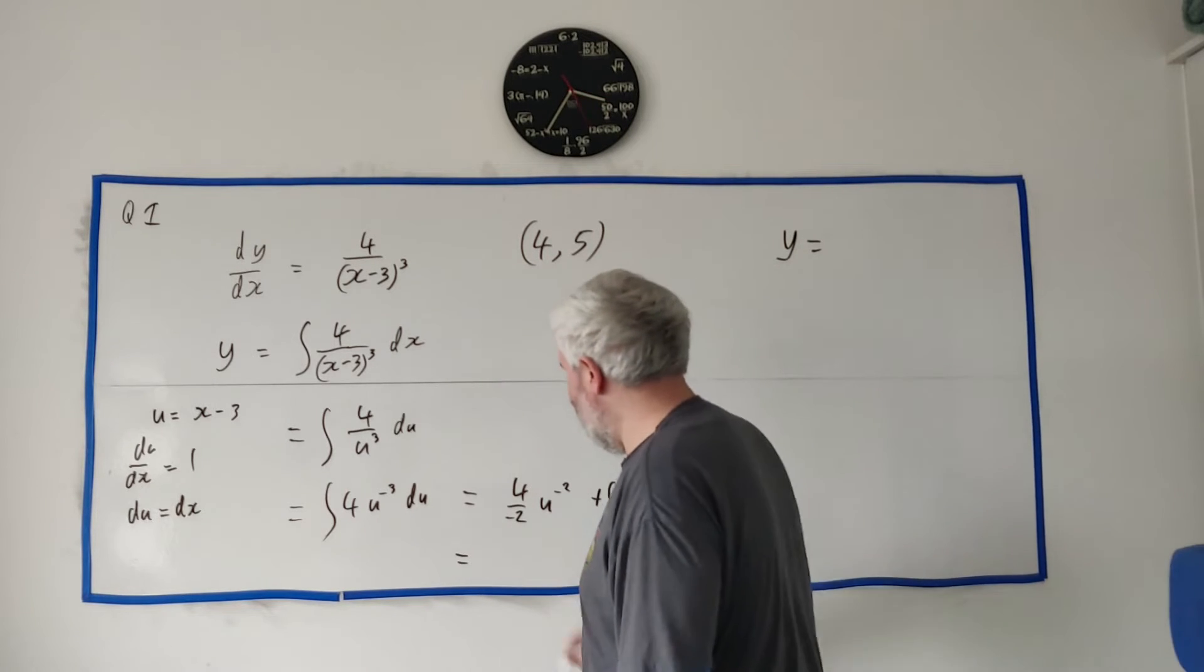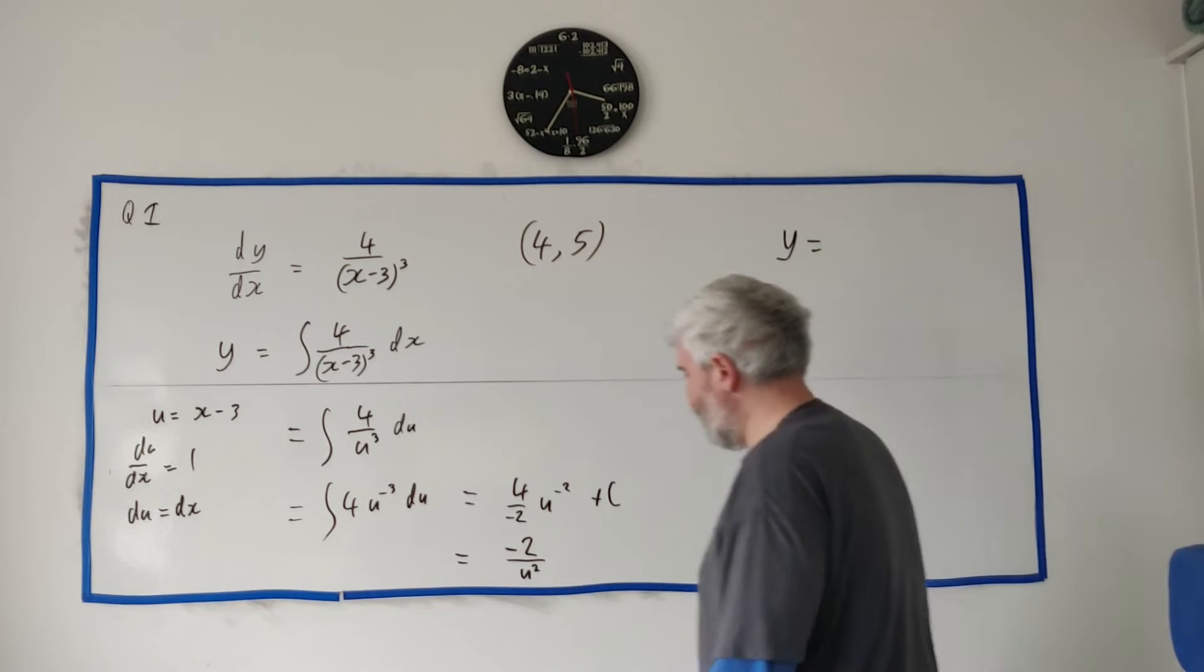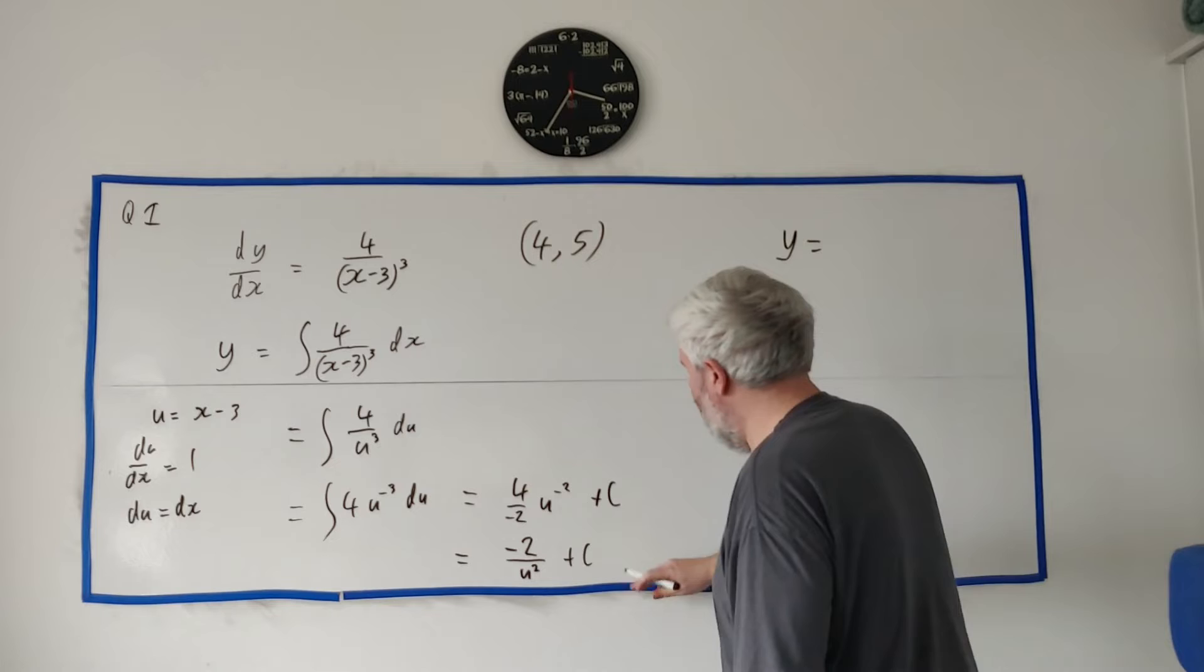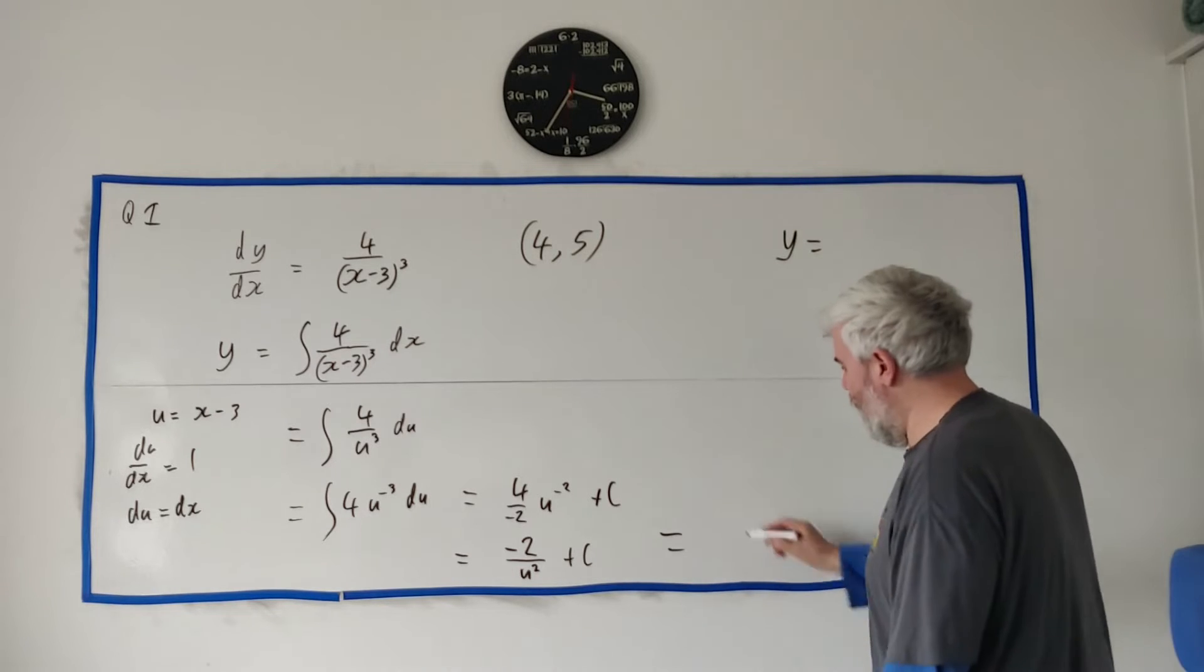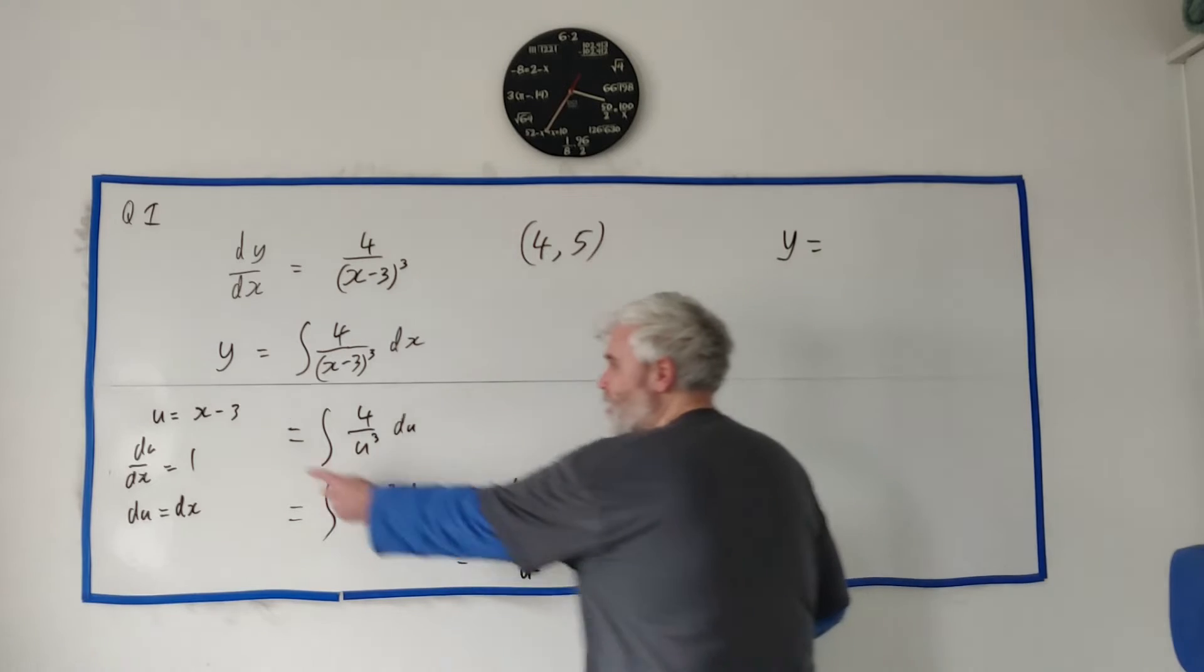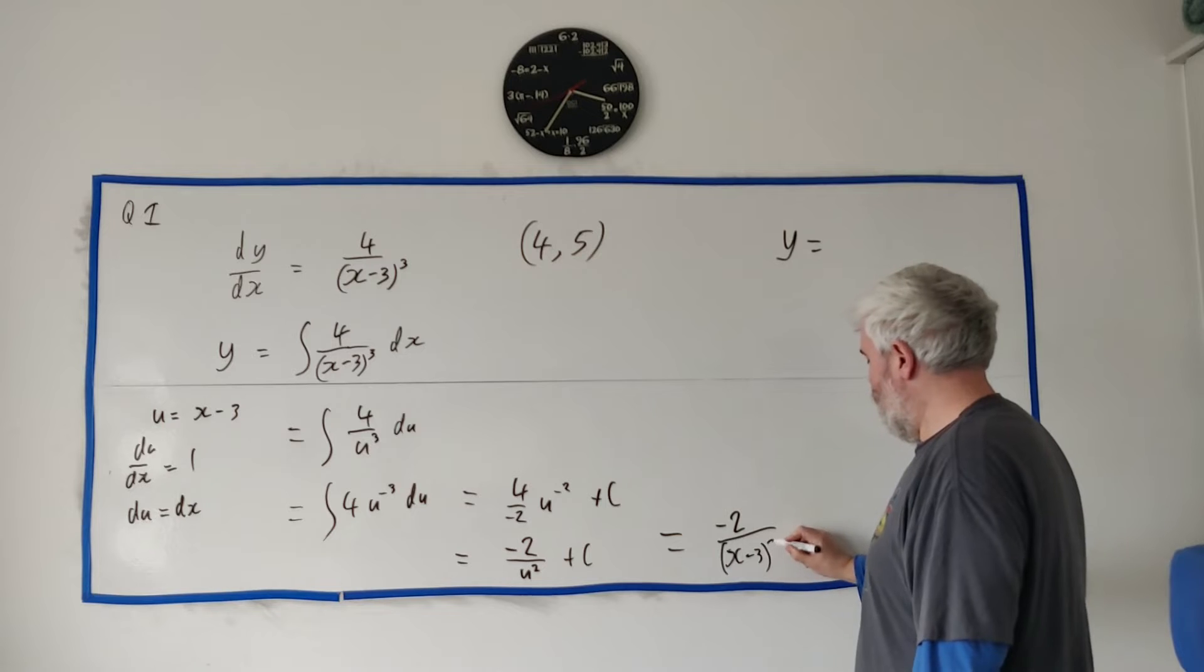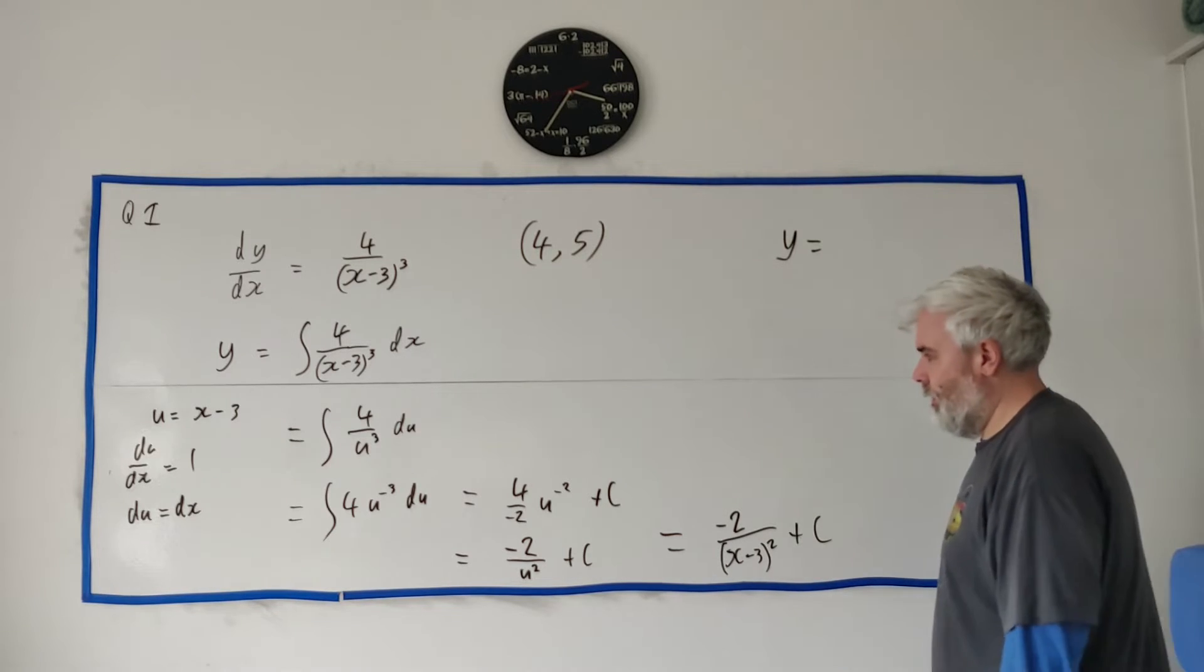And we can clean that up. We can get minus 2 over u squared, plus a constant. And let me do it one more time over here. Minus 2 over, instead of u, let's substitute it back, (x-3) squared, plus the constant c.